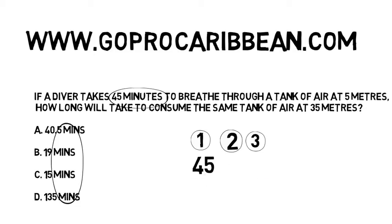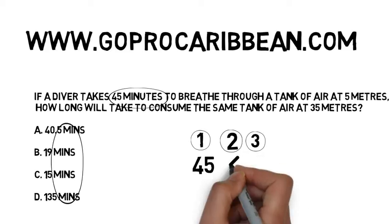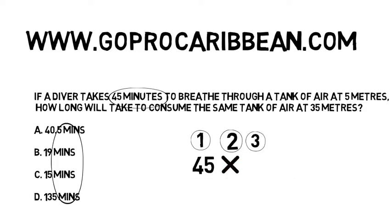Step two is always to think: do I multiply or do I divide? Well, we're talking about air consumption in minutes and we're going to the surface. Am I going to consume my air faster at the surface than at depth, or slower? We're going to consume it slower at the surface than at depth, so we are going to multiply 45 minutes to make it a bigger number — a higher number of minutes, a slower air consumption.